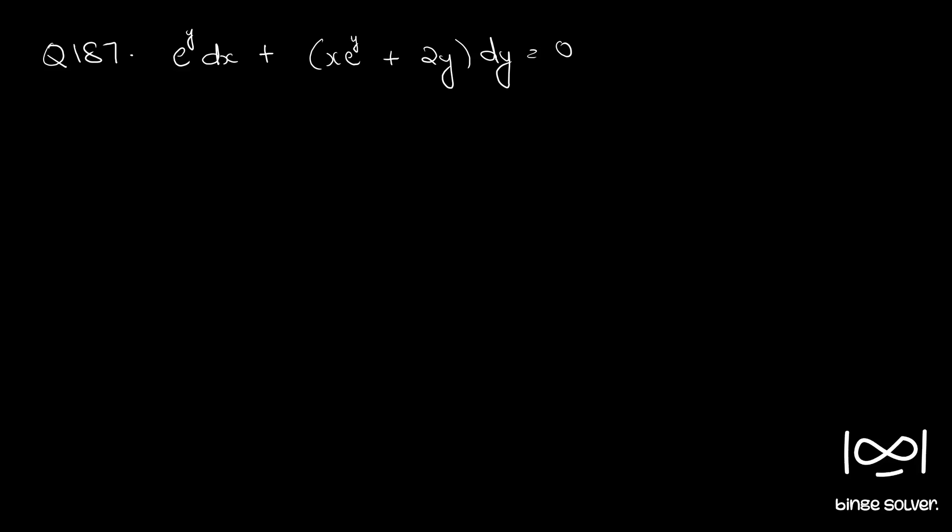Question number 187. e raised to y dx plus x e raised to y plus 2y dy equal to 0.